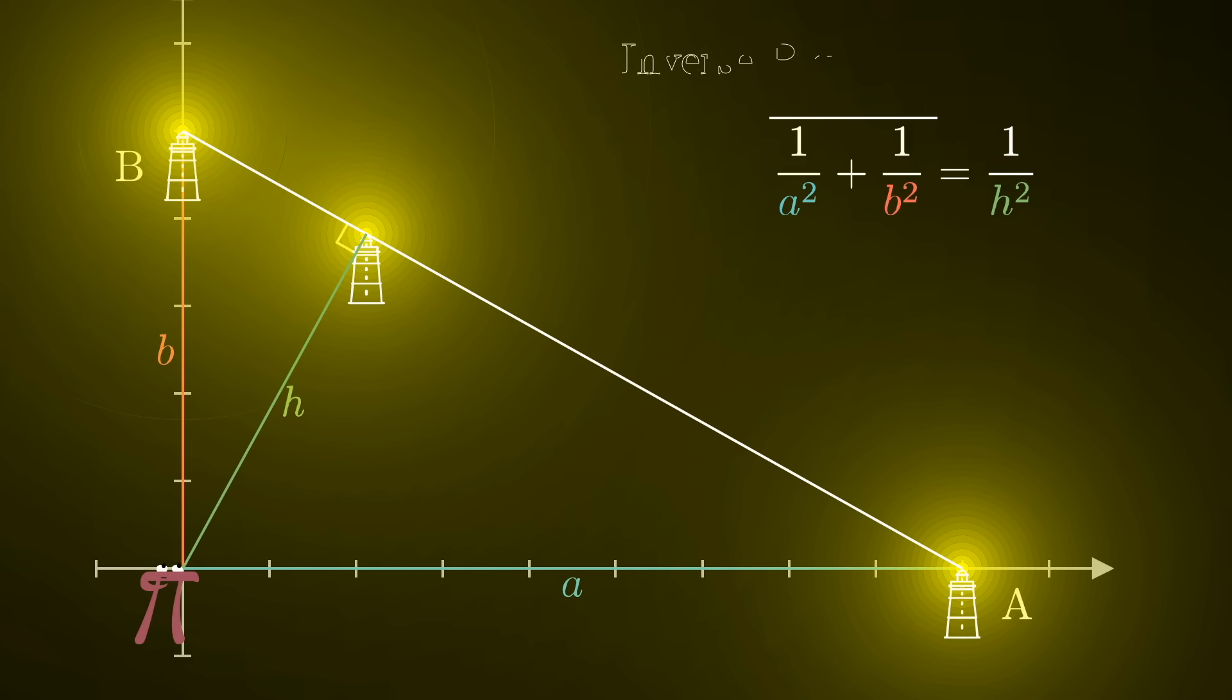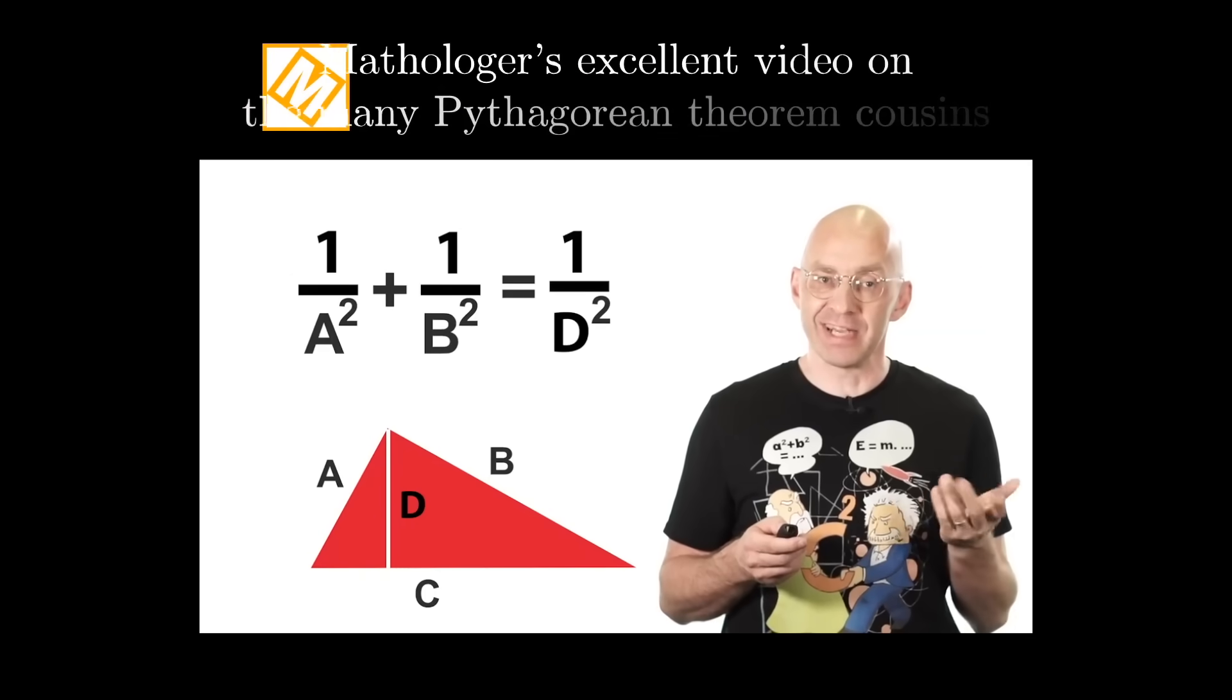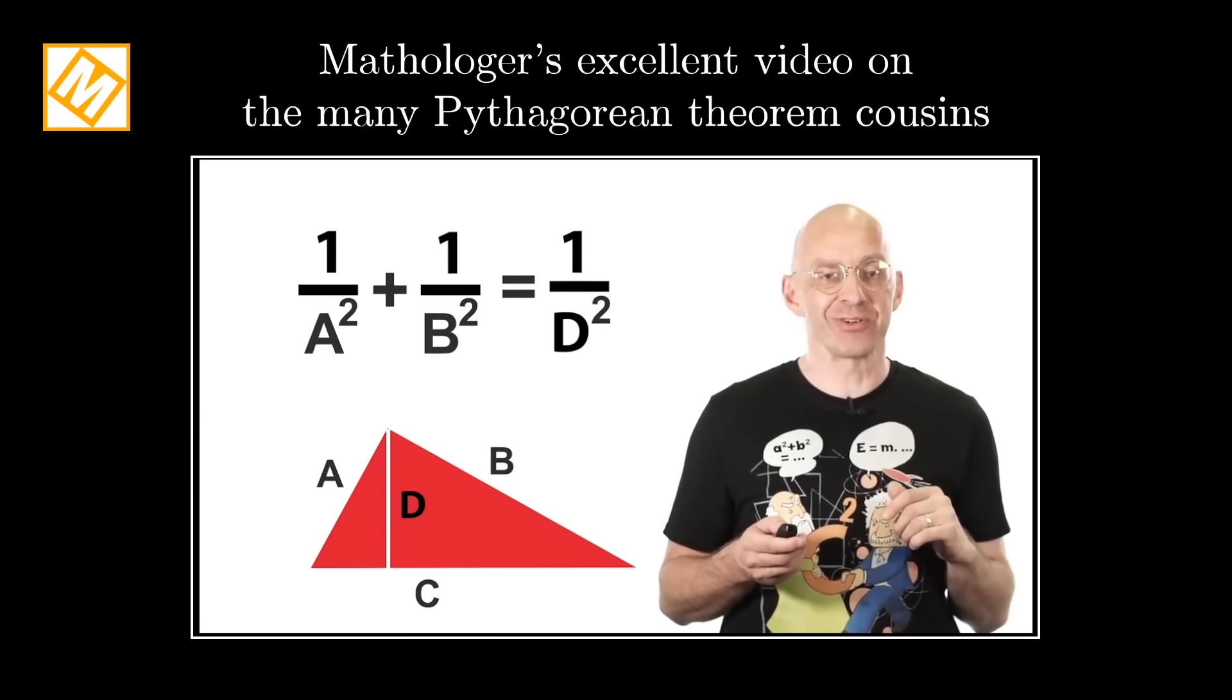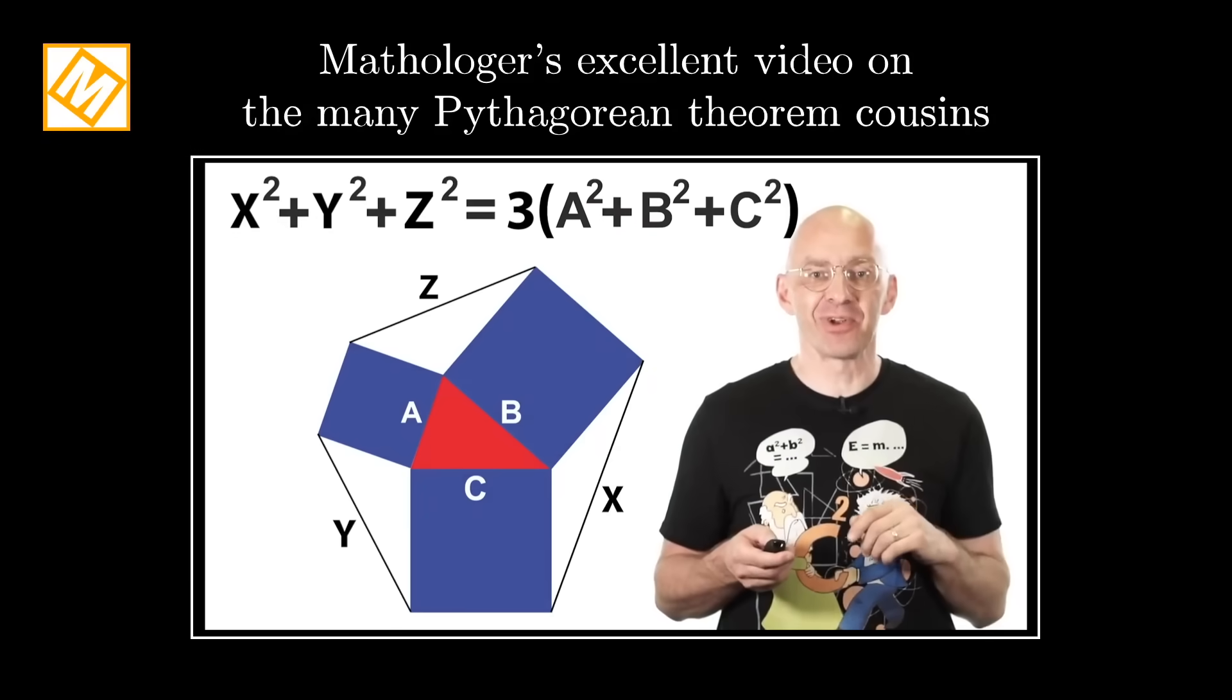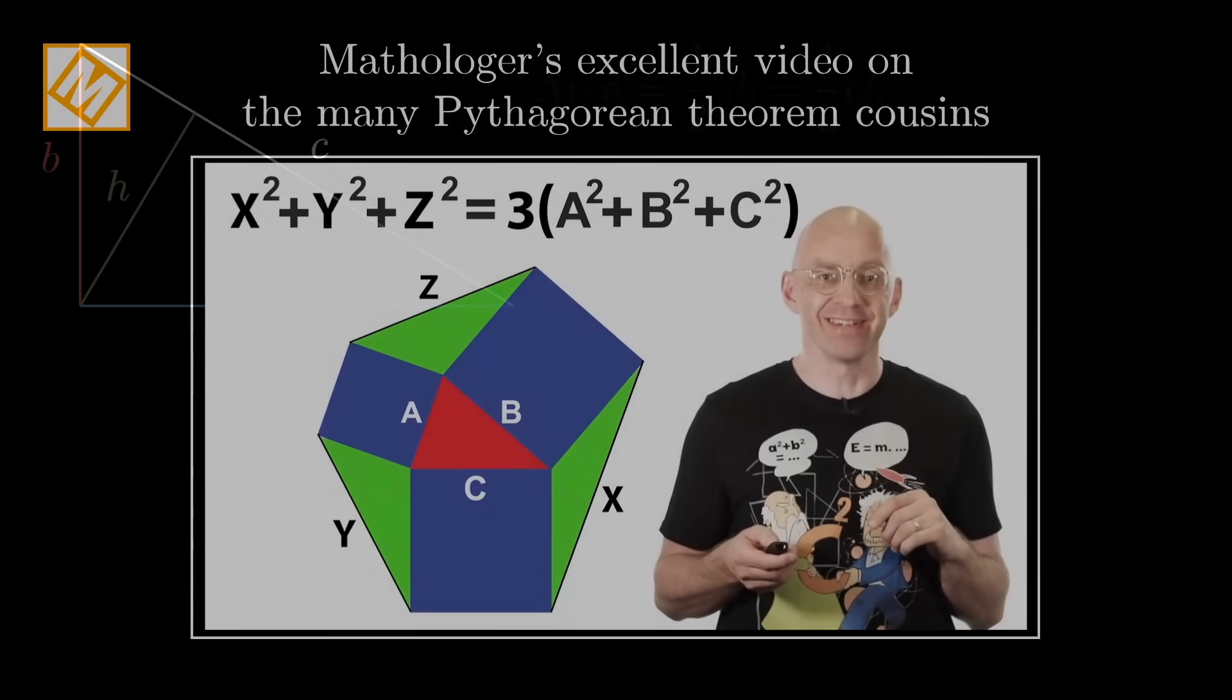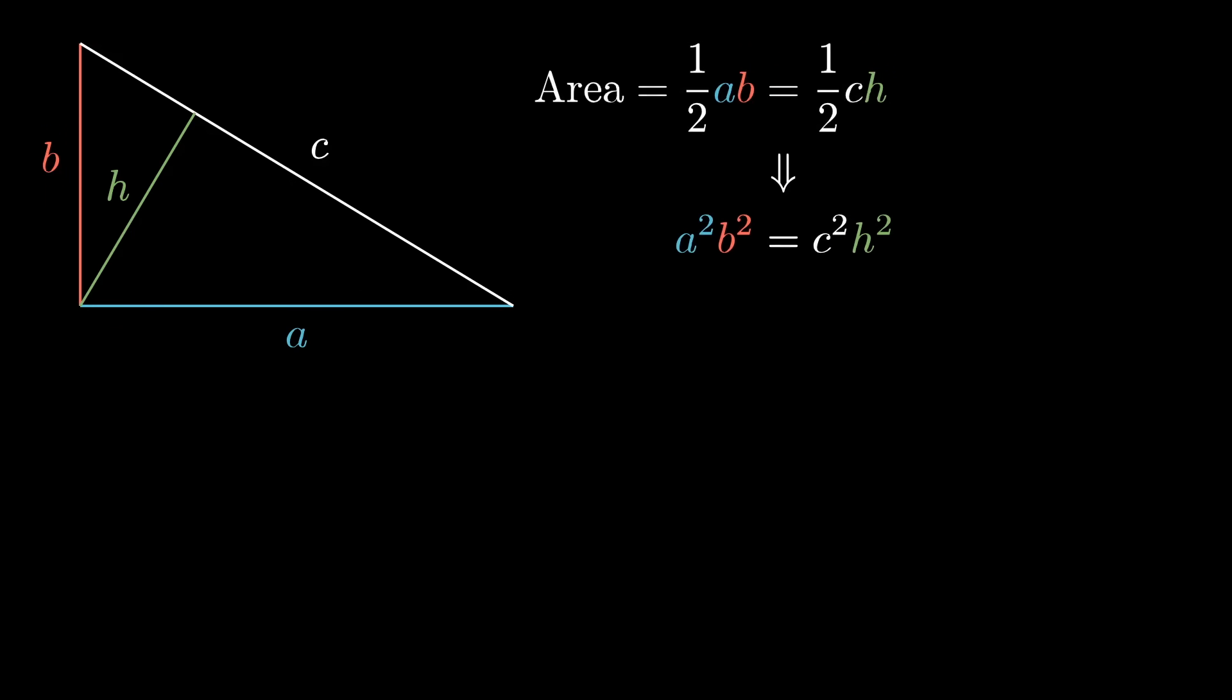This is the much less well-known inverse Pythagorean theorem, which some of you may recognize from Mathologer's most recent and I'll say most excellent video on the many cousins of the Pythagorean theorem. Pretty cool relation, don't you think? And if you're a mathematician at heart, you might be asking right now how you prove it. And there are some straightforward ways where you express the triangle's area in two separate ways and apply the usual Pythagorean theorem.